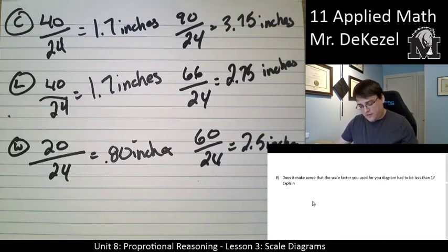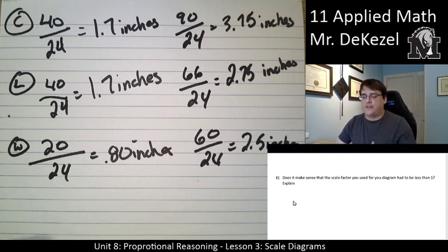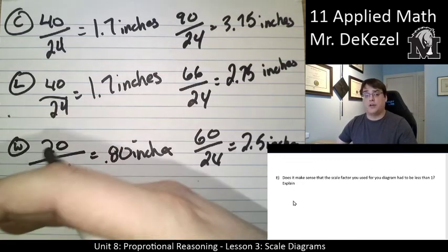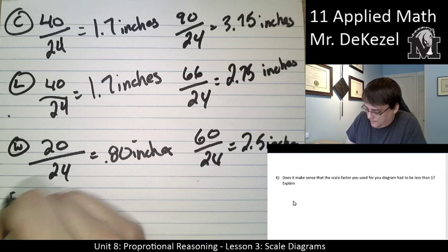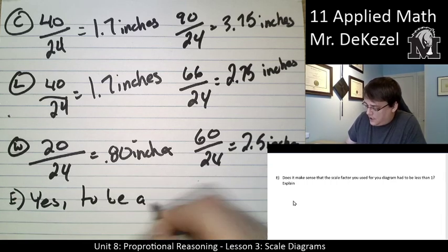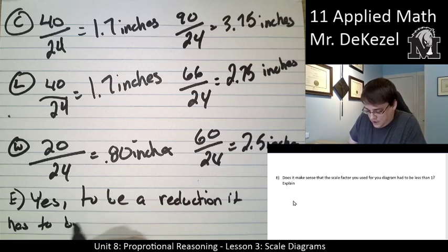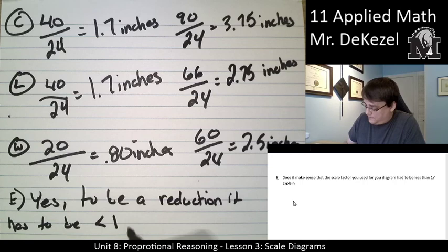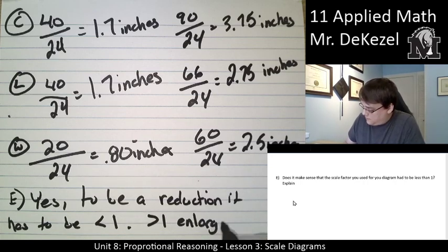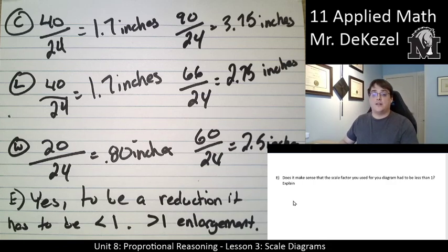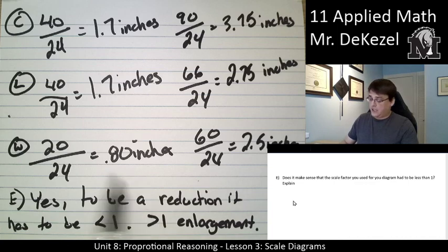Does it make sense that the scale factor you used for your diagram had to be less than one? So when we say we're reducing something, then we are going to be having a scale factor that's less than one, one divided by 24 essentially. When we're making something larger, we're going to be multiplying it by a number that is larger than one to make it bigger. To be a reduction, it has to be less than one. Greater than one, if you have a number that's greater than one, it's an enlargement. So that's why we were dividing each of these by 24 to make it smaller.